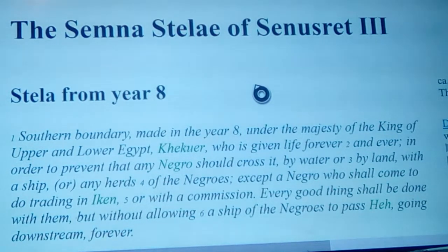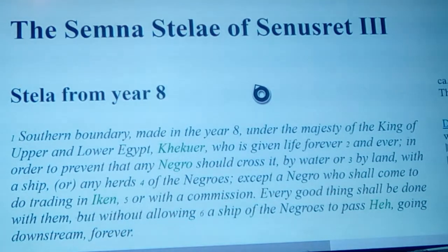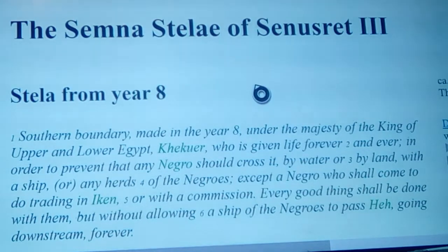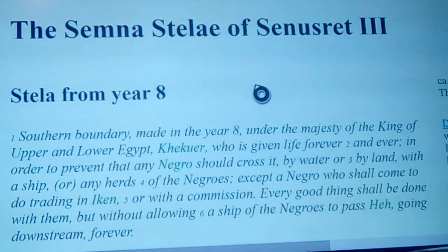Today we're going to look at the Semna stelae of Senusret III. It's a stele from year 8 of his reign. It says: 'The southern boundary made in the year 8 under the majesty of the king of upper and lower Egypt, Kekure, who has given life forever and ever, in order to prevent that any Negro should cross it by water.'